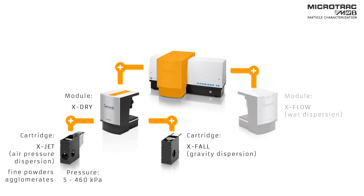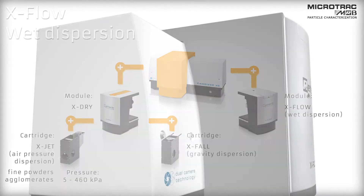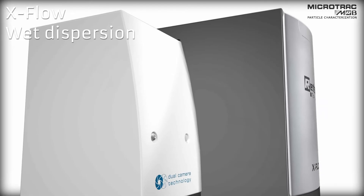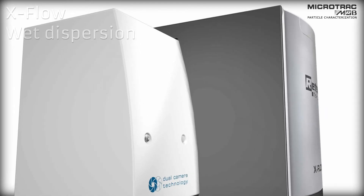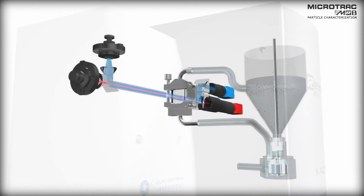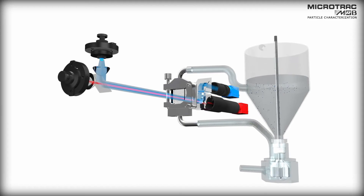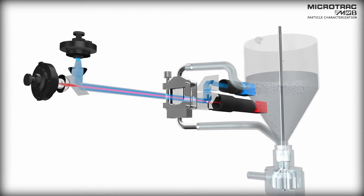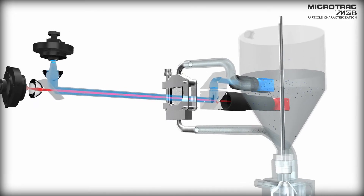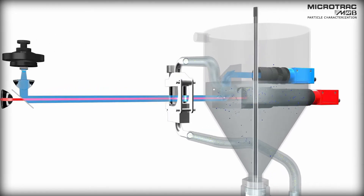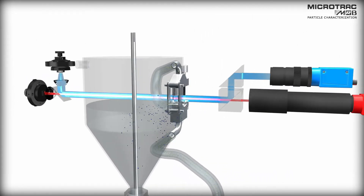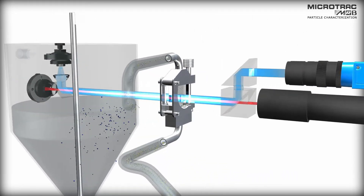With the X-flow module, the CamSizer X2 offers the possibility of analyzing particles in suspension. The sample is dispersed in a liquid which circulates through the measurement system. This method is ideal for very fine particles in the lower micrometer range.